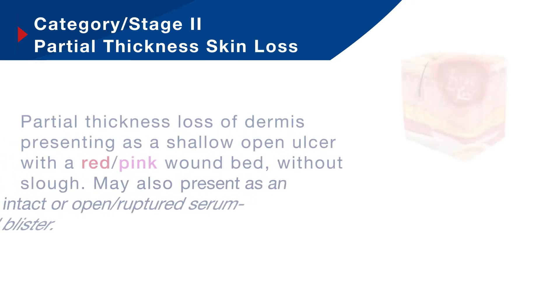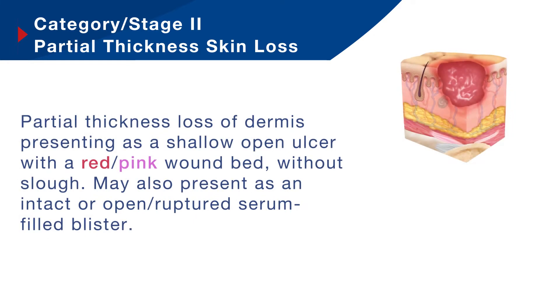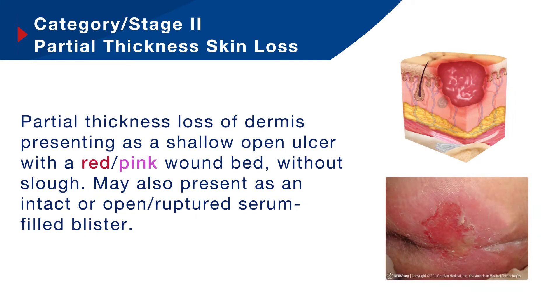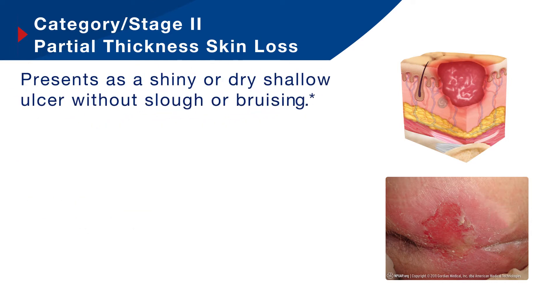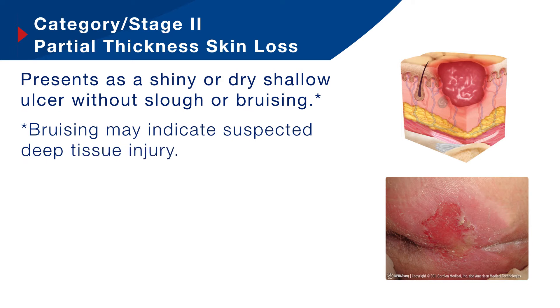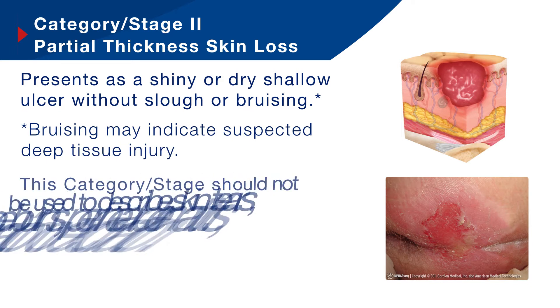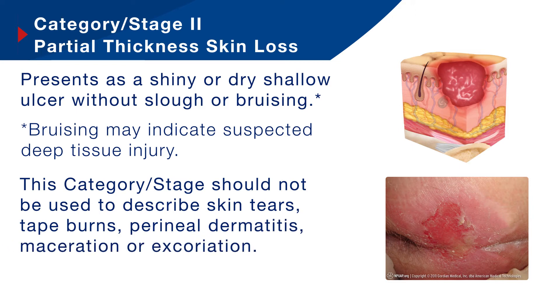Moving on to category two pressure ulcers — this is partial thickness skin loss. We have partial thickness loss of the dermis presenting as a shallow open ulcer with a red-pink wound bed without slough. It may also present as an intact or open ruptured serum-filled blister, or as a shiny or dry shallow ulcer without slough or bruising. If there is bruising present, this may indicate suspected deep tissue injury. This category should not be used to describe skin tears, tape burns, perineal dermatitis, maceration or excoriation.